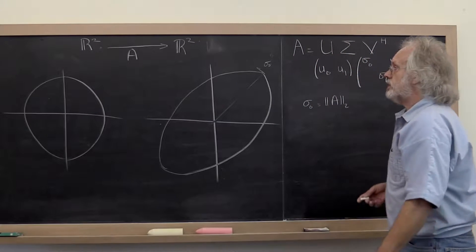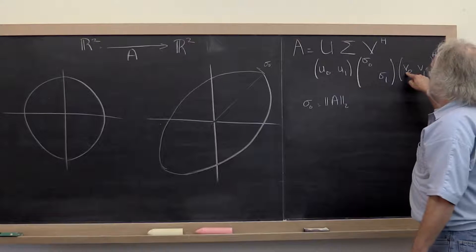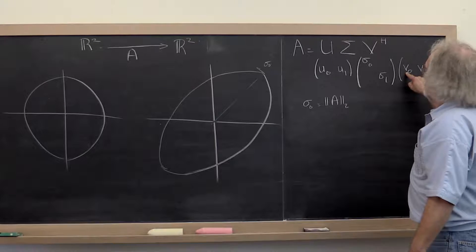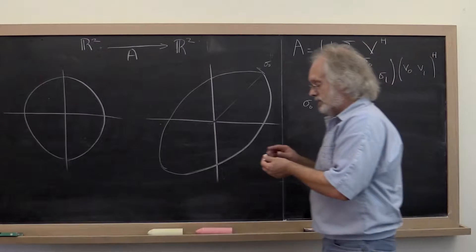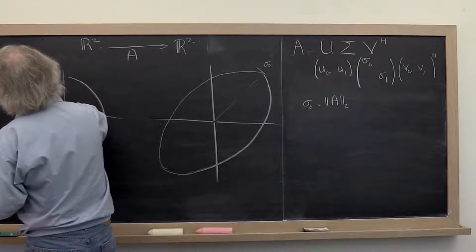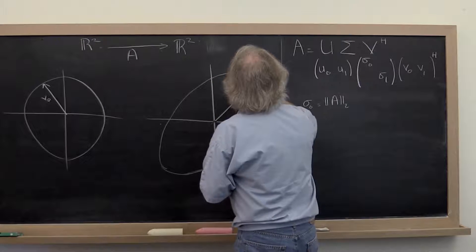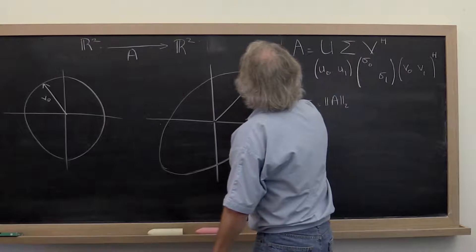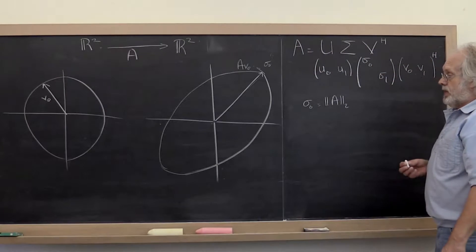In coming up with the singular value decomposition, we pick V0 to be the unit length vector such that it achieves the maximum magnification. That means that over here there's some vector V0 that maps to this vector right here. So this here is A times V0.